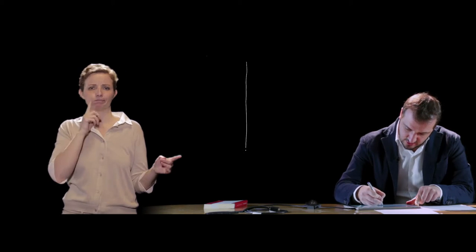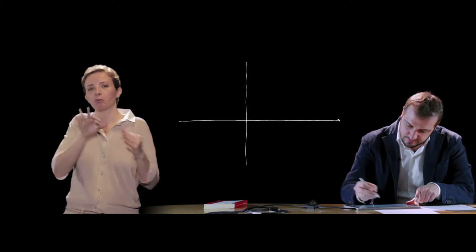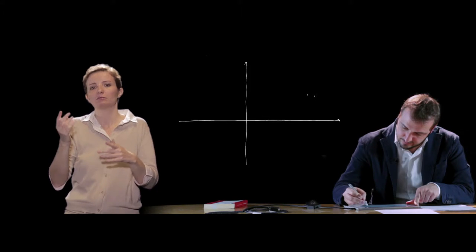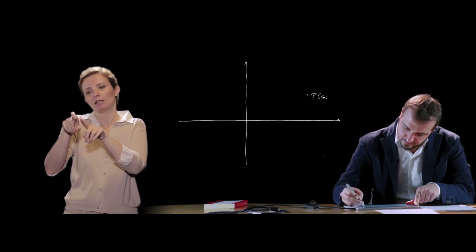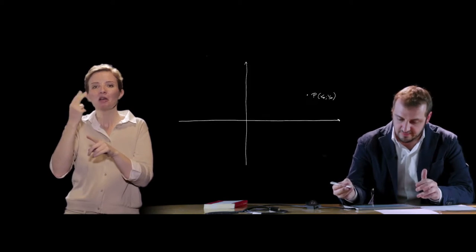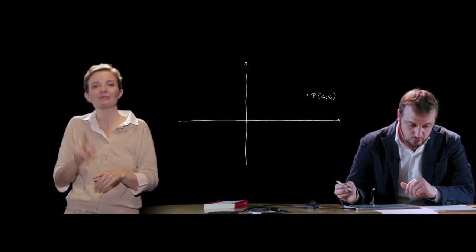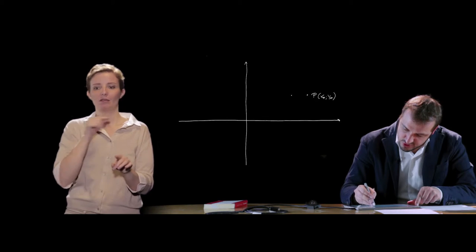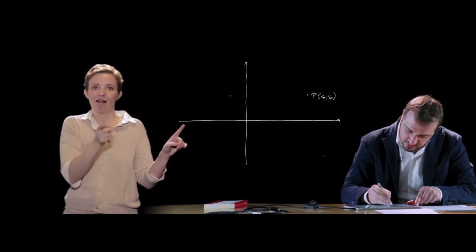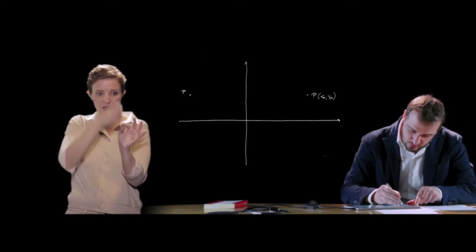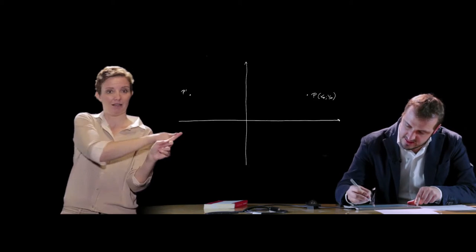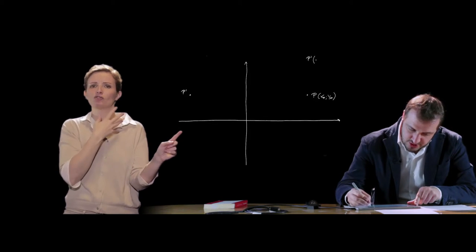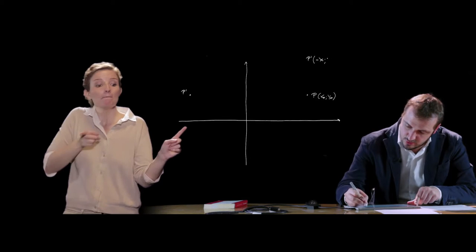Un altro aspetto molto importante riguarda le simmetrie di un punto. Nel piano cartesiano, dato un punto generico P di coordinate xP, yP, il punto simmetrico di P rispetto all'asse delle y, chiamato P', ha come ascissa l'opposto dell'ascissa di P, e come ordinata la stessa ordinata di P.